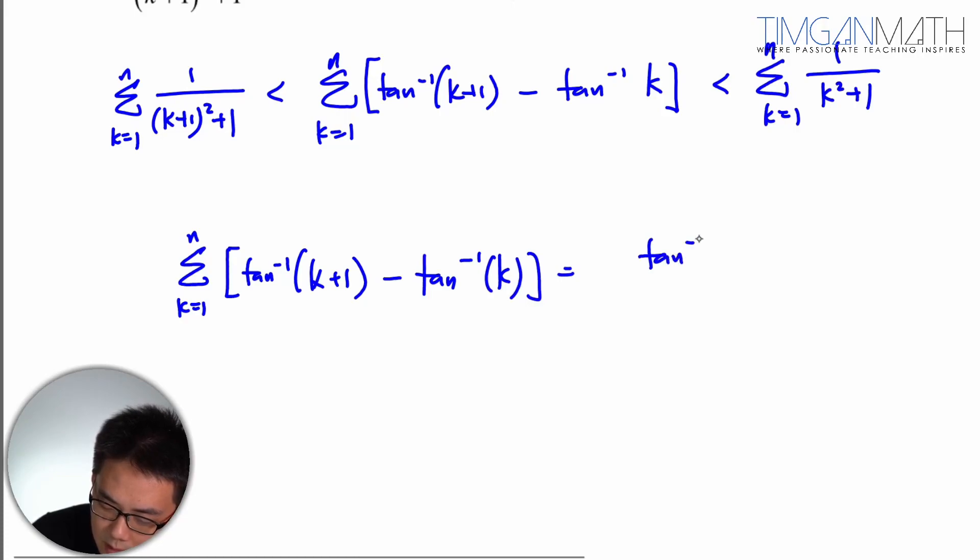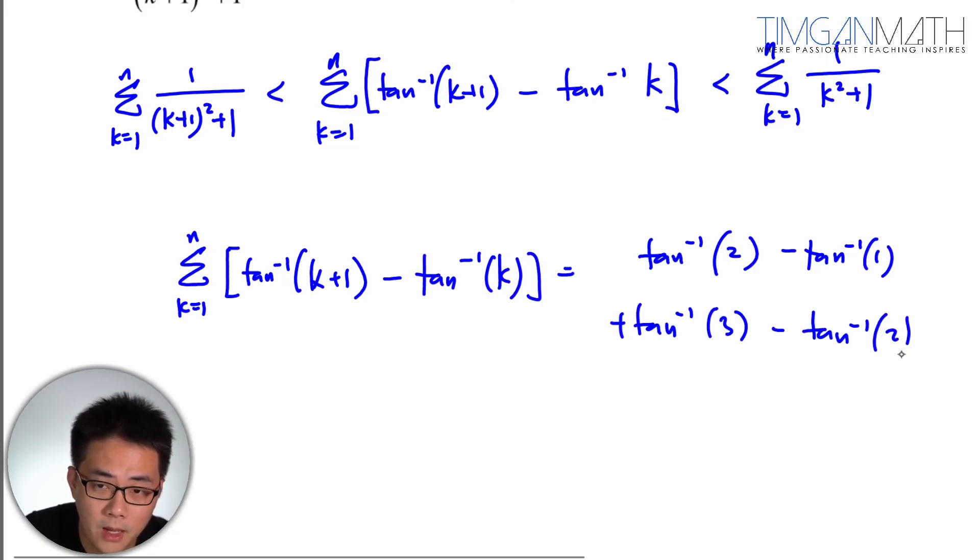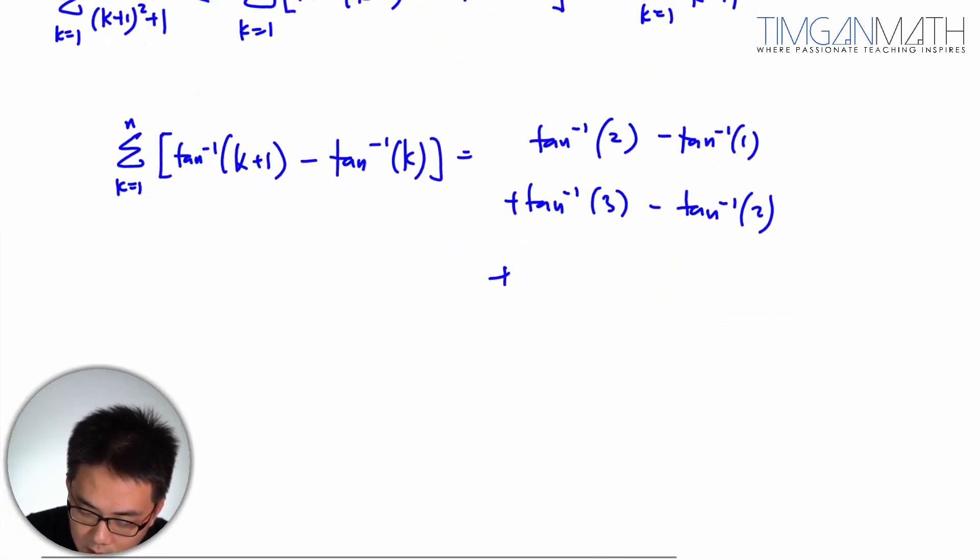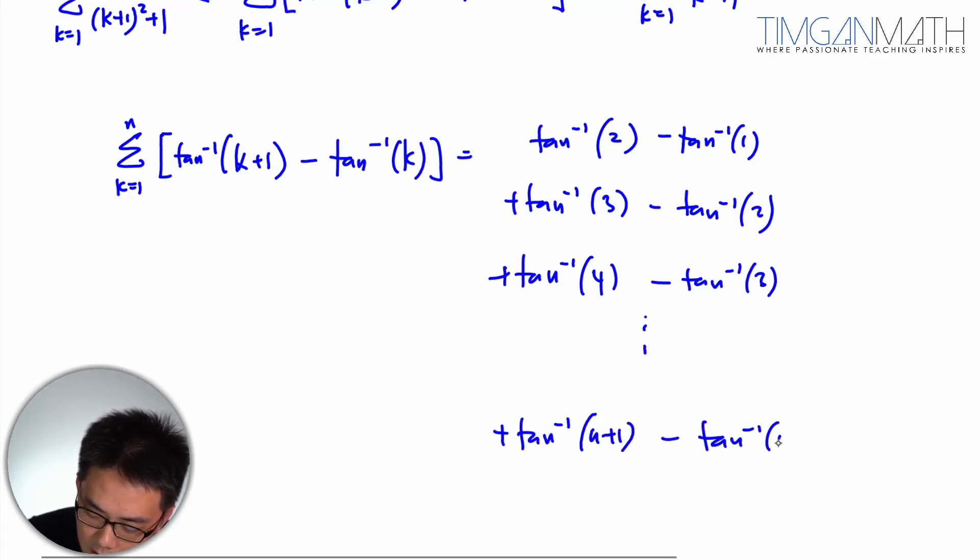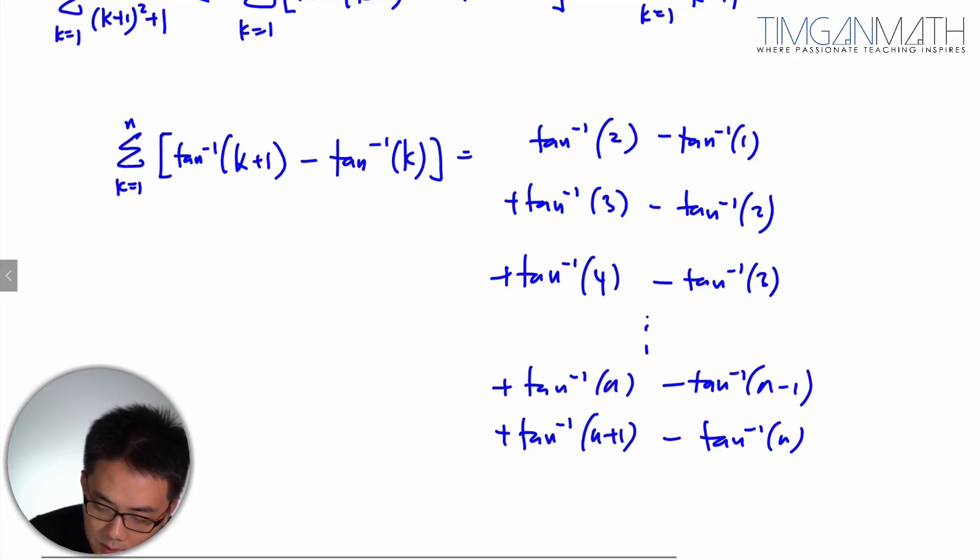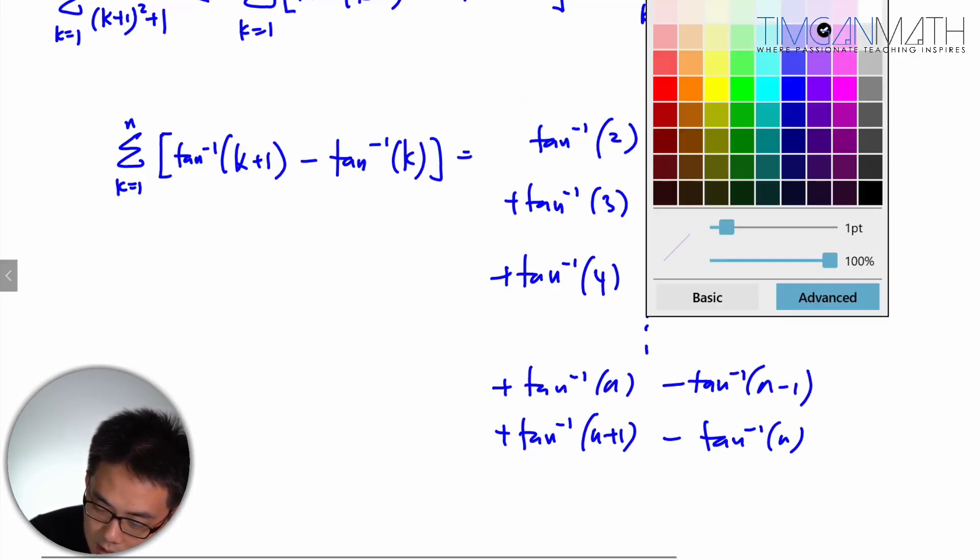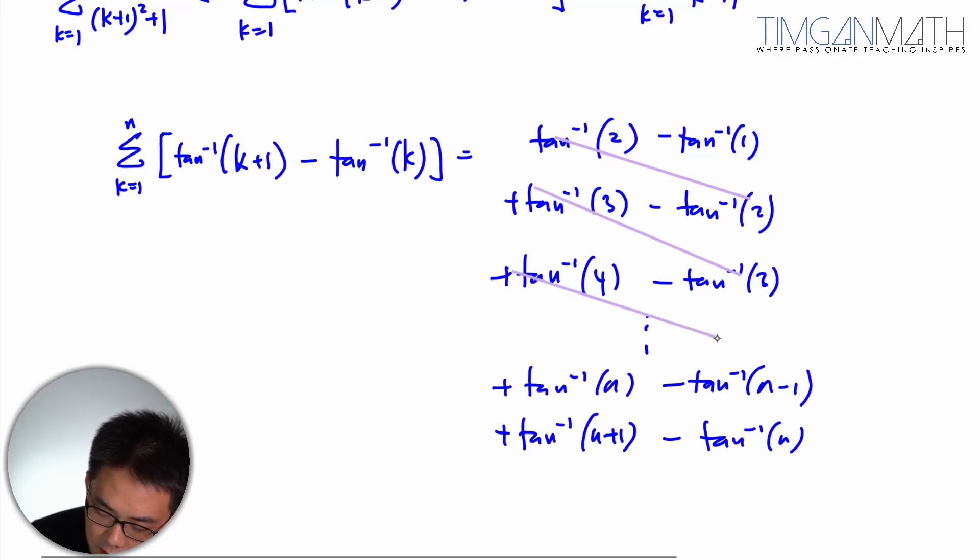So this would be tangent inverse 2 minus tangent inverse 1 plus tangent inverse 3 minus tangent inverse 2 and tangent inverse 4 minus tangent inverse 3. So this will just go all the way to tangent inverse n plus 1 minus tangent inverse n minus 1. So once this is done, we're going to cancel this part here. Cancel it out, cancel, cancel, cancel.